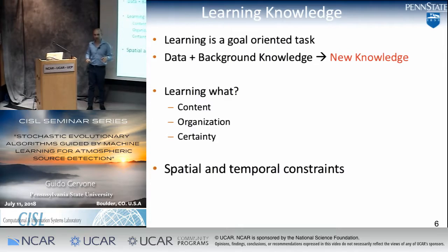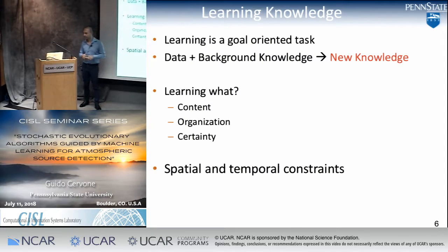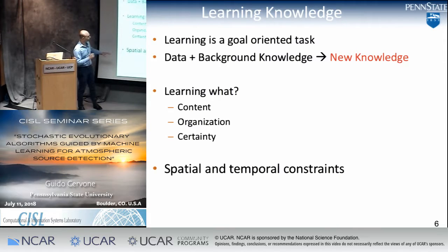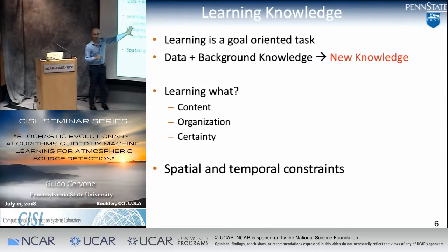The last type is certainty. If the phone book is 10 years old, your certainty is rather low. Once it's updated, you have learned just by increasing certainty. In my field, two additional meta-attributes are super important: the spatial and temporal constraints, which are intricated into all three types of learning.